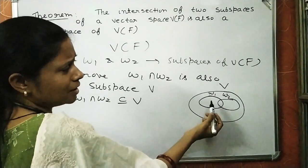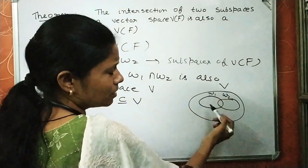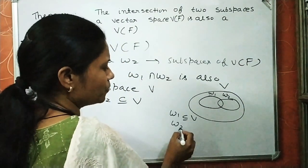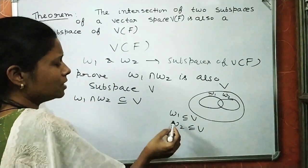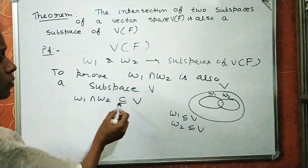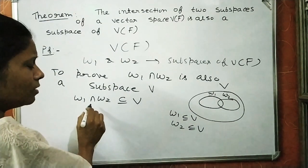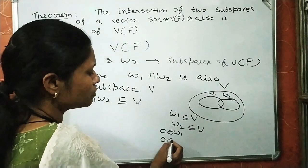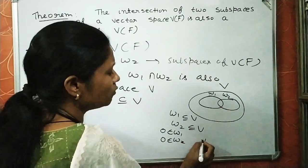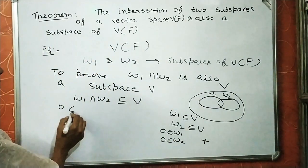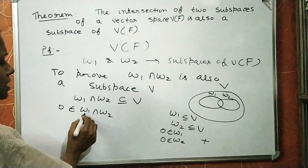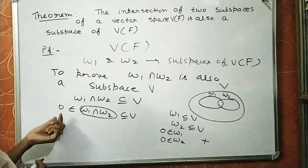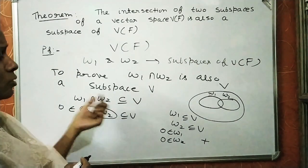It is obvious that W1 intersection W2 is a subset of V, since both W1 and W2 are non-empty subsets of V. It is confirmed that W1 intersection W2 is also a non-empty subset of V, because at least the zero element is present in W1 and also in W2. Therefore, zero belongs to W1 intersection W2, meaning this subset has at least one element — zero. So it is a non-empty subset of V.